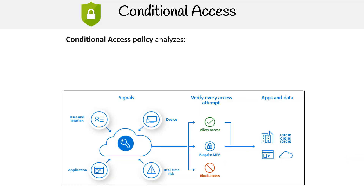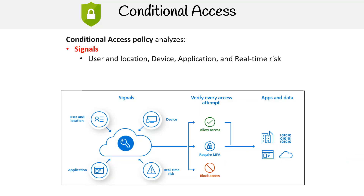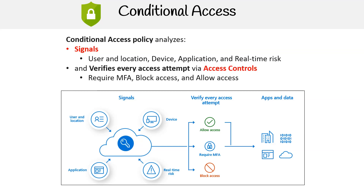Conditional access policy analyzes signals including user and location, device, application, and real-time risk, and verifies every access attempt via access controls. This requires MFA, block access, or allow access.